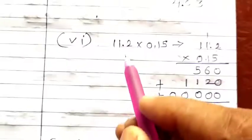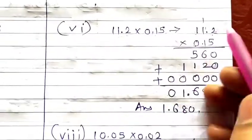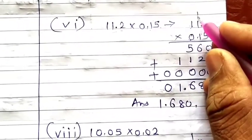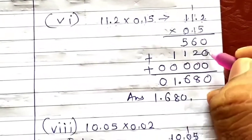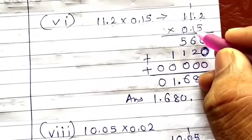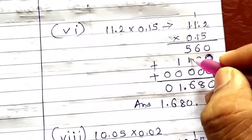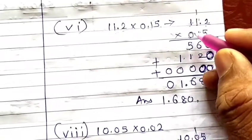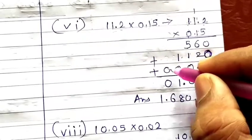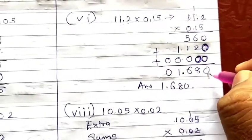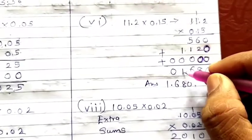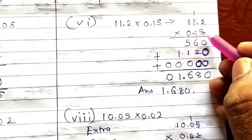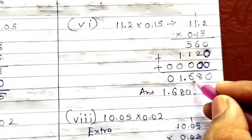Then 11.2 into 0.15. Multiply 5 by 2 is 10, carry 1; 5 by 1 is 5 plus 1 is 6; 5 by 1 is 5. Place a zero; multiply 1 by 2 is 2, 1 by 1 is 1, 1 by 1 is 1. Place two zeros by default, then multiply 0 by all digits to get 0. Add: 0, 6 plus 2 is 8; 5 plus 1 is 6; 1 plus 0 is 1; 0. Count decimals: 1 digit in 11.2 and 2 digits in 0.15, total 3. Leave 3 digits from the last — answer is 1.680.